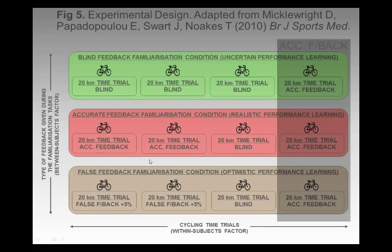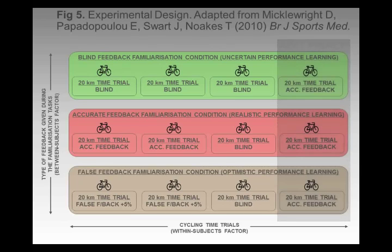The most interesting condition is the false feedback condition. They were led to believe, after several time trials, that they were capable of cycling at, say, 40 kilometres an hour, when in actual fact they were only trundling along at 38, because the bike was showing them 5% faster.